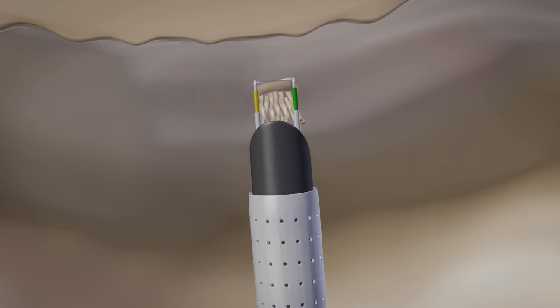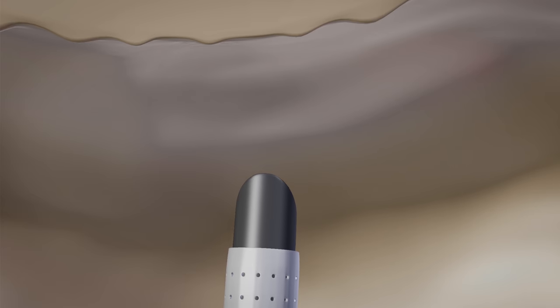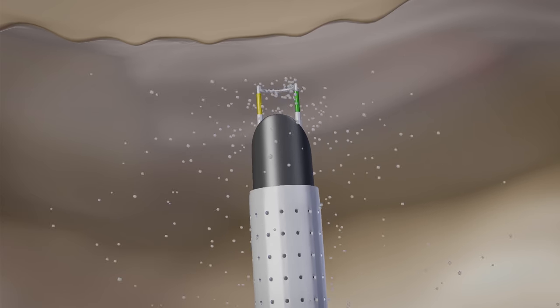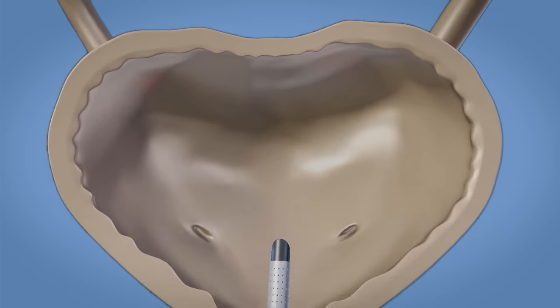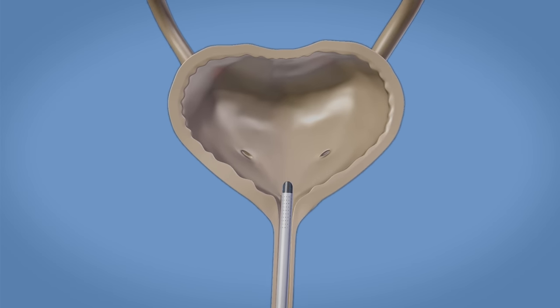A cutting tool is used to remove the tumor. Then heat is applied on the surrounding area of the tumor to stop the bleeding. Now, the resectoscope is pulled out.